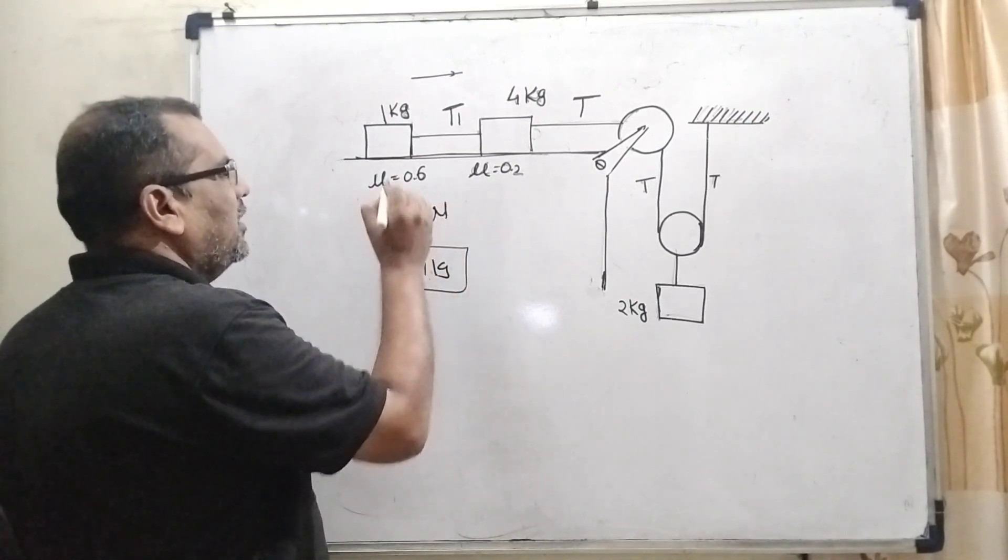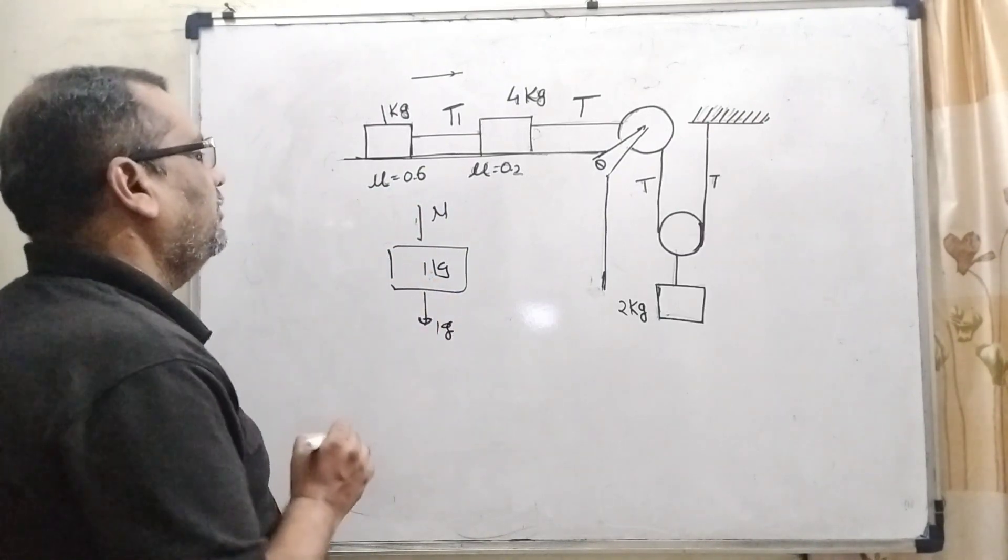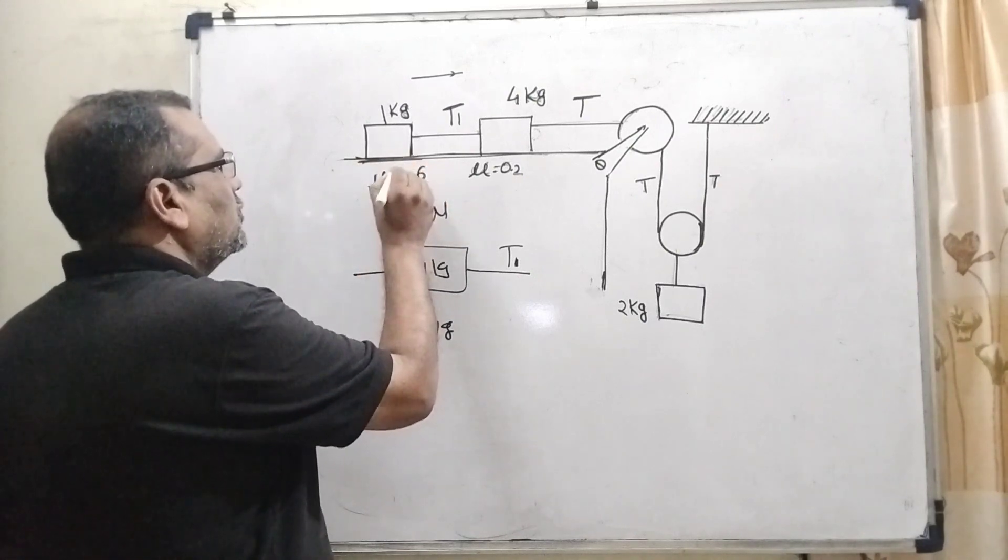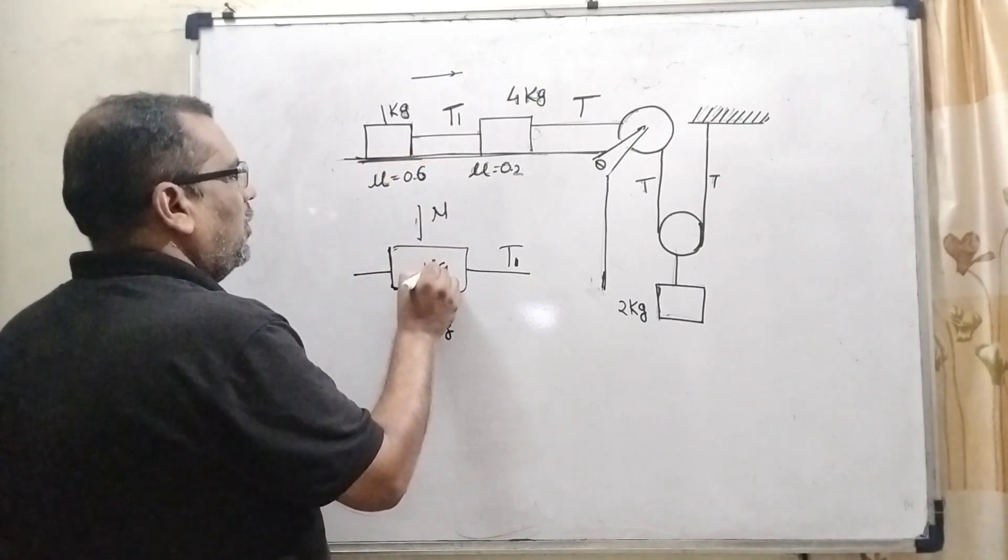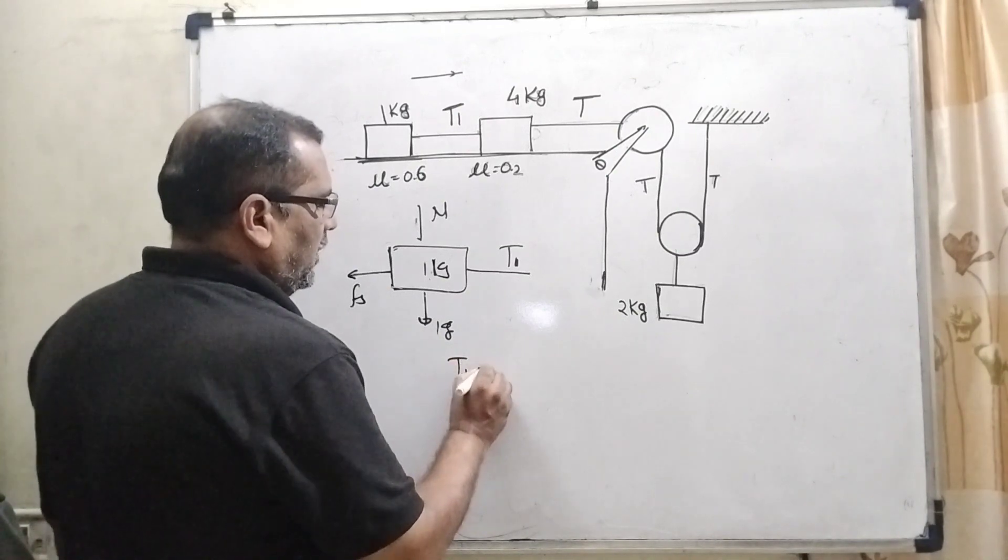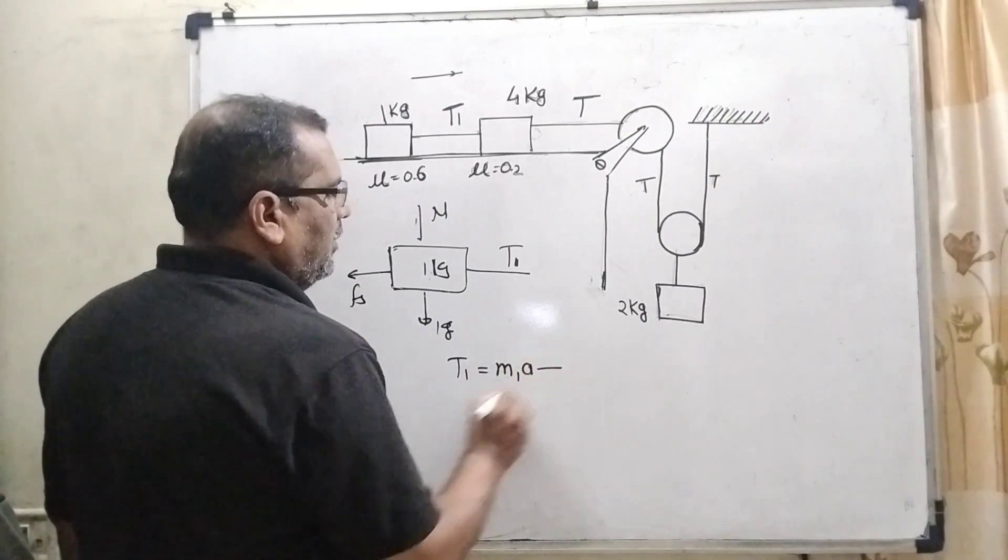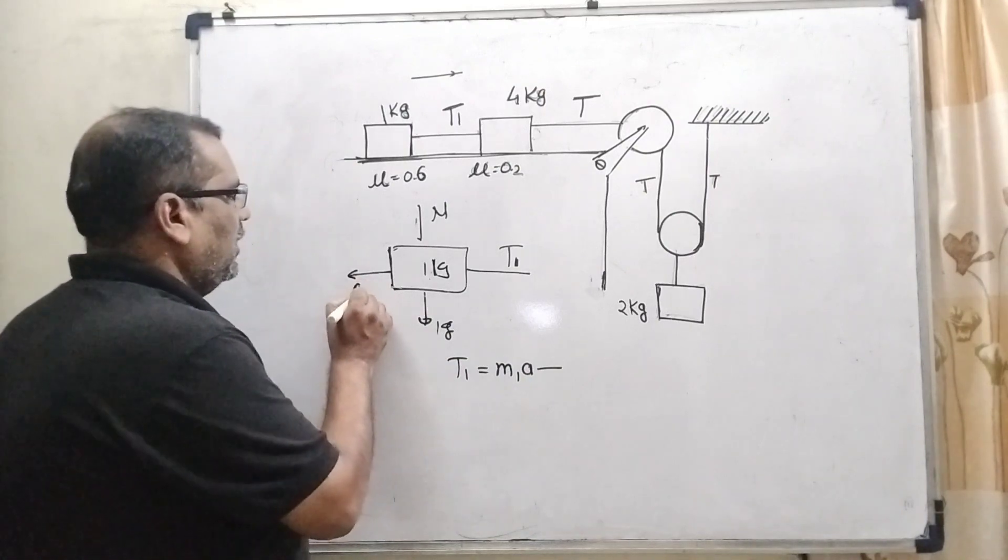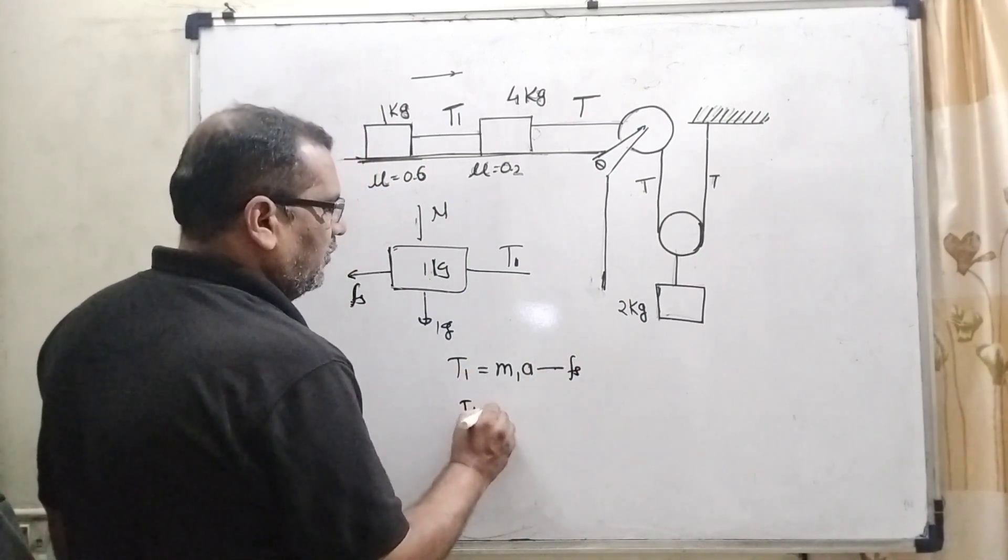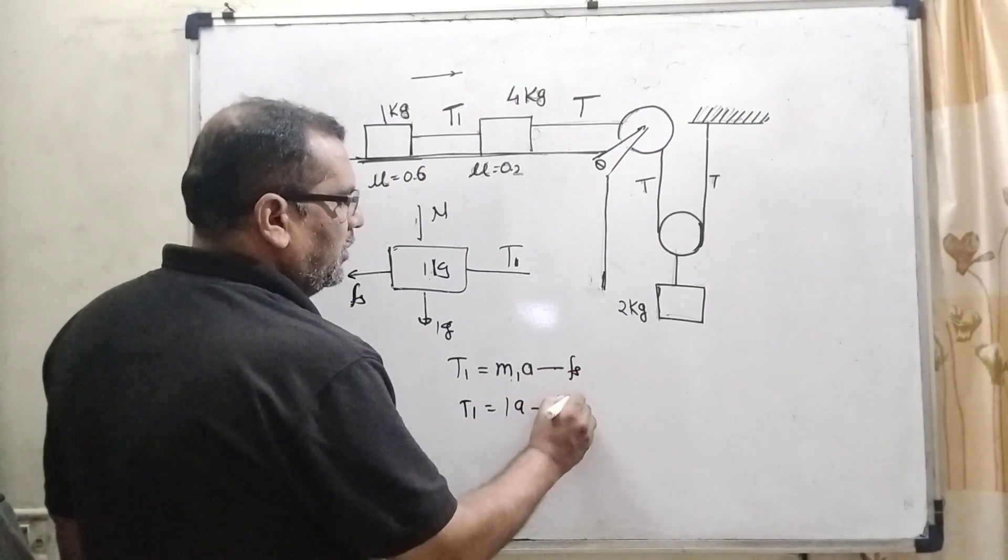We can see that normal force acting on the upper side. Here Mg, here 1 kilogram that is the weight and g is acting in downward direction. Here T1 acting to the right side and here the friction acting also against this first block to the left side that is Fs. Is it clear? Now T1 equal to M1 A and minus here the friction working against the opposite direction means left side that is Fs. So here T1 equal to what is the weight? That is 1 kilogram A minus here Fs can be written as mu Mg.